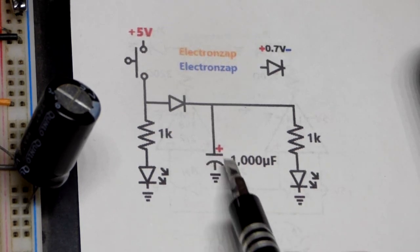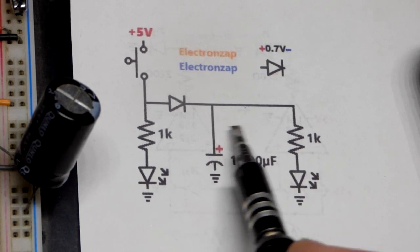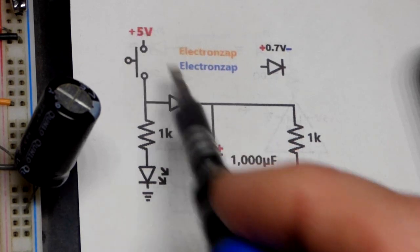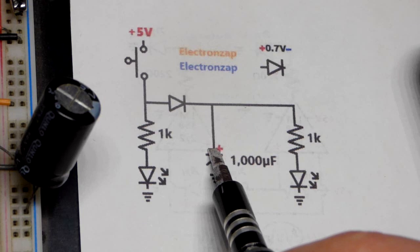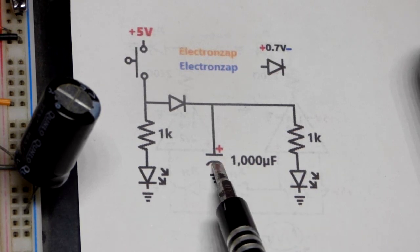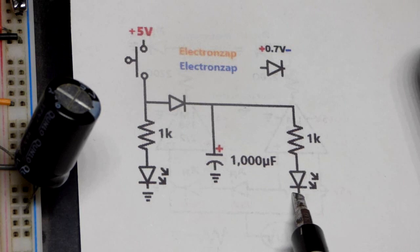Instead of powering the load directly we could have the capacitor send a signal to a transistor, tell the transistor to turn on. Even at a lower voltage it can turn the transistor on fully. That's very easy to do. So the load in this case would have 5 volts across it. And also the transistor doesn't draw as much current, so it can maintain that 5 volts for a long period of time before it also fades off.